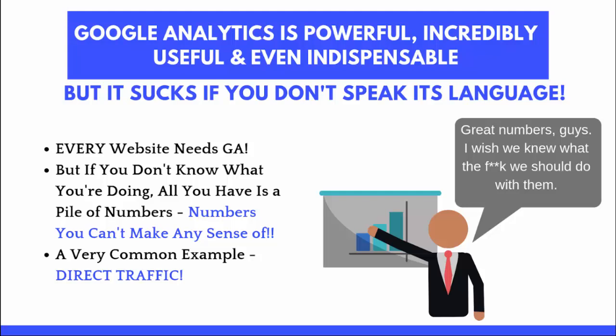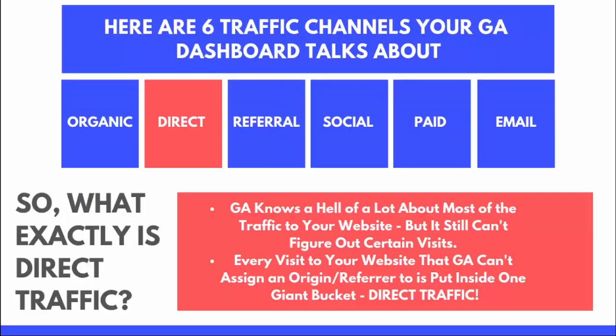One of the most common problem areas is direct traffic, and that's the only thing we're going to focus on today. There are six major types of traffic: organic, direct, referral, social, paid, and email. Organic is everything from a search engine; social comes from social media sites; paid is paid advertising; email is when someone clicks through from an emailed link; and referral is any external website — for example, if you have a link on Forbes and someone clicks through, Forbes would be the referrer.